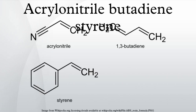Acrylonitrile butadiene styrene is a common thermoplastic. Its glass transition temperature is approximately 105 degrees Celsius. ABS is amorphous and therefore has no true melting point.